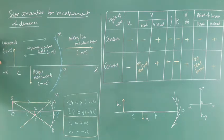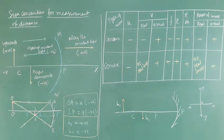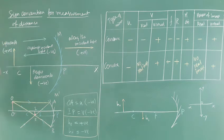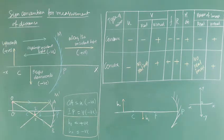The height of the object: the object is placed on the principal axis (x-coordinate). Above the principal axis is taken as positive. Below the principal axis is taken as negative. With one example, you can understand this more clearly.